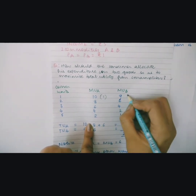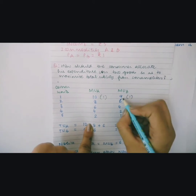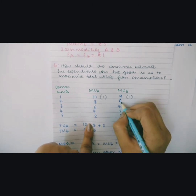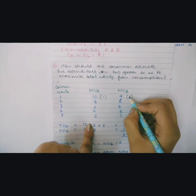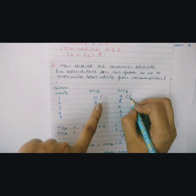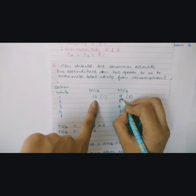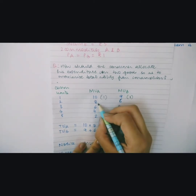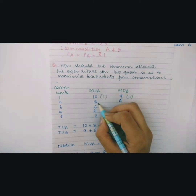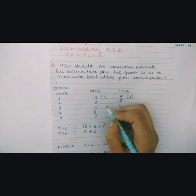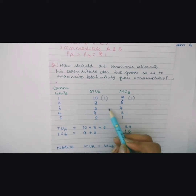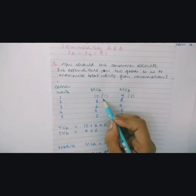The next best utility you can get is 9, because 9 is greater than 8 and 9 is greater than 6, so you will consume one unit of commodity B. So far, one unit of commodity A and one unit of commodity B have been consumed, and you are left with 3 rupees. From your income of 5 rupees, you have spent 2, and left with 3. The next maximum marginal utility comes from commodity A.